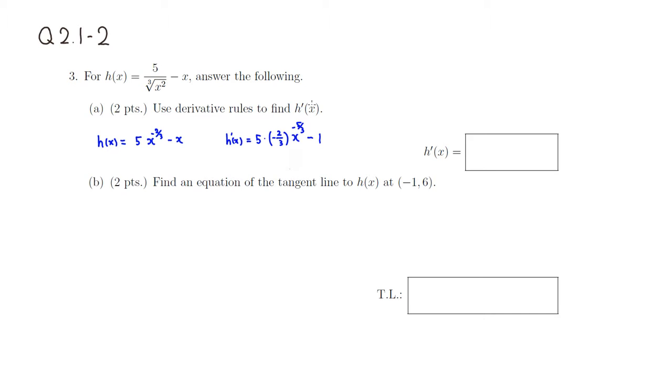So then we can clean it up a little bit here. So you have a negative, we have 5 times 2 is 10 over 3. Since it has a negative power, so x is going to be on the bottom. And then we're going to raise it to the fifth power.